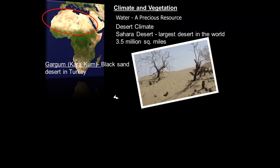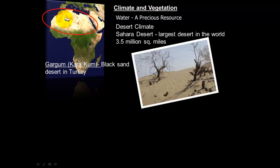Moving to climate: the vast majority of the Middle East has a desert climate, though it was not always this way. Water is therefore a very precious resource in the Middle East. The Sahara Desert is the largest desert in the world — up to 3.5 million square miles, roughly the size of China or the United States — and it makes up most of the northern part of the African continent.